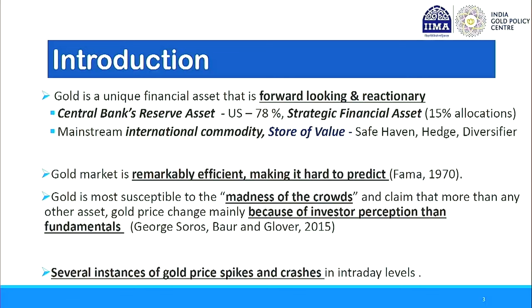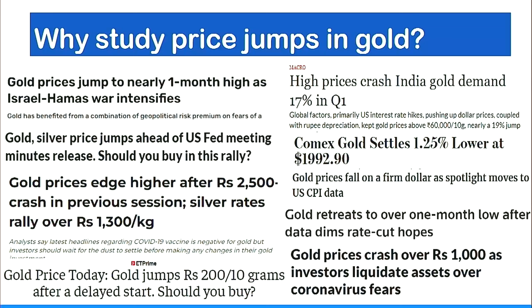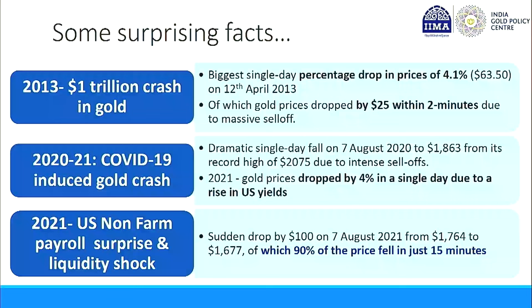We found that gold prices are majorly driven by the madness of the crowd rather than fundamental factors. George Soros popularized the statement that more than any asset in the world, gold is majorly driven by investor perception rather than fundamentals. We found a couple of instances of gold price crashes — newspaper clippings of recent ones show gold prices crashing because of Israel-Hamas, gold prices jumping because of the US dollar markets, crashing by thousands of rupees per gram. The question is: are all crashes driven by news, or is there some other factor?